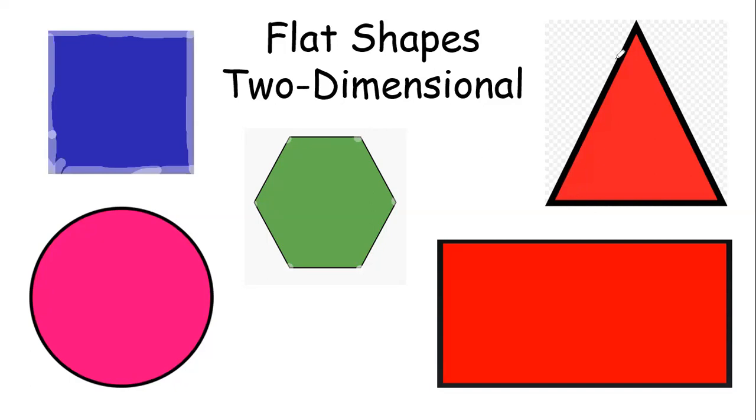And then my triangle has how many sides, friends? Three. One, two, three. It also has one, two, three corners.